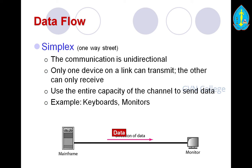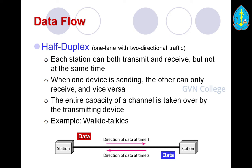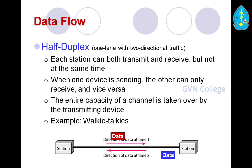Here the picture shows a mainframe — data is pressed and directed to the monitor. The next method is half-duplex — one LAN with two-directional traffic. Each station can both transmit and receive, but not at the same time. When one device is sending, the other can only receive, and vice versa. The entire capacity of the channel is taken over by the transmitting device. The example is walkie-talkies. Station 1 sends data at one time and station 2 sends data in the next direction.